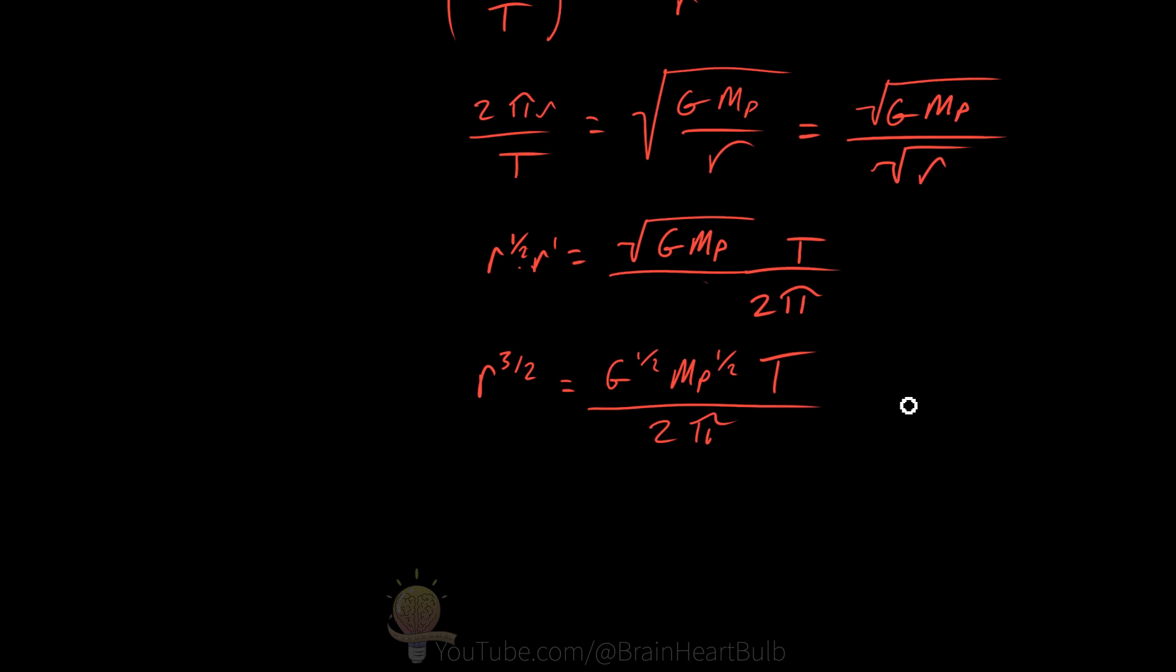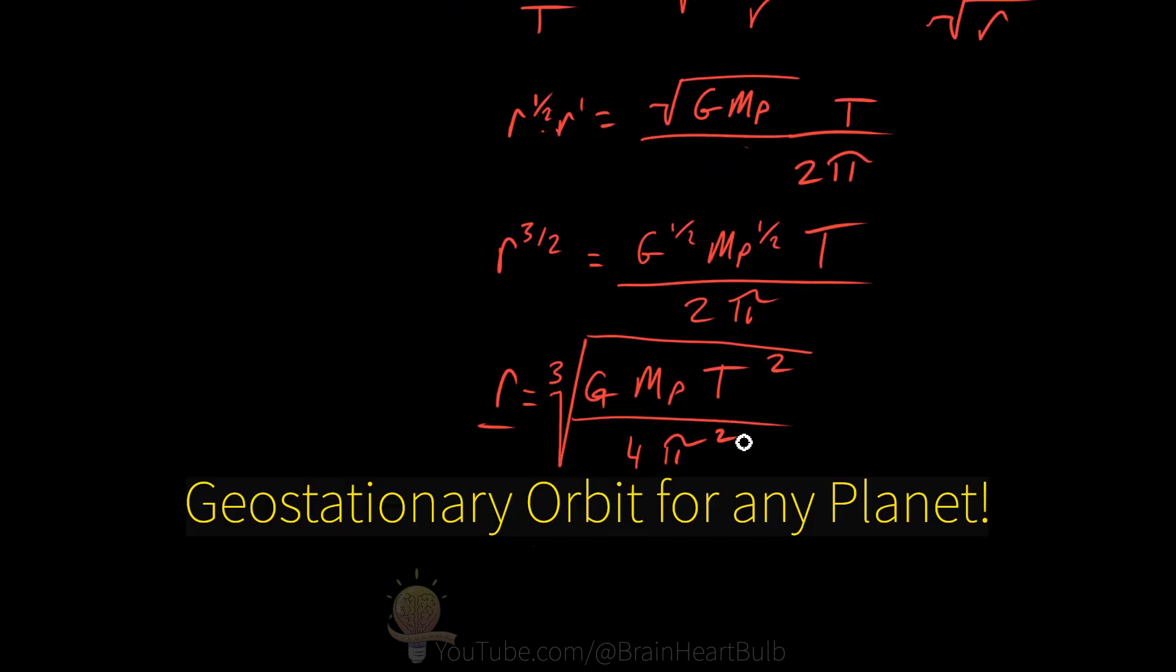And the very last thing we need to do to remove this fractional power is to raise each variable here by the power of 2, and then cube root it, giving us r, which is equal to g to the power of a half squared, which is g. Same for the mass of the planet. T squared over 2 squared, which is 4, pi squared, and then we cube root all of this. And that's our final formula. And I forgot to square the pi. There we go.